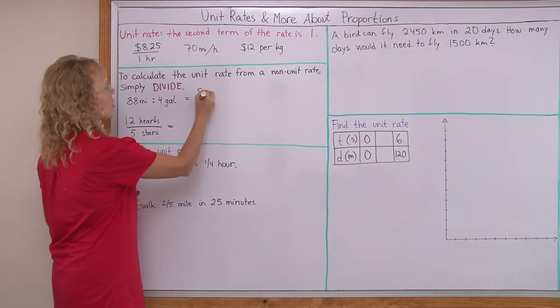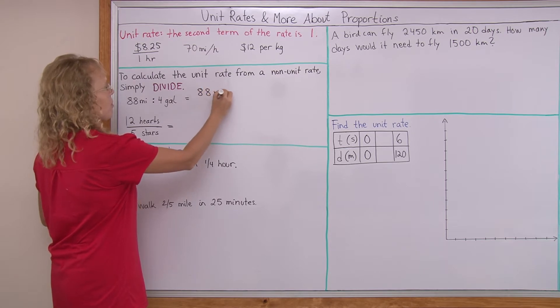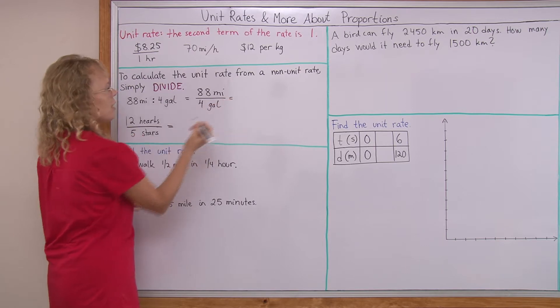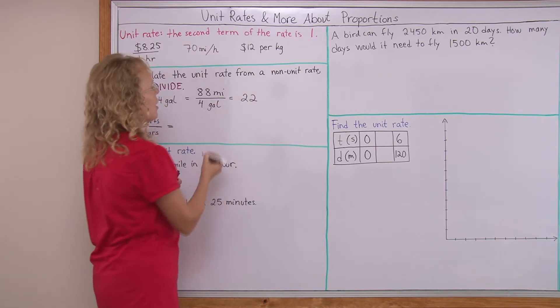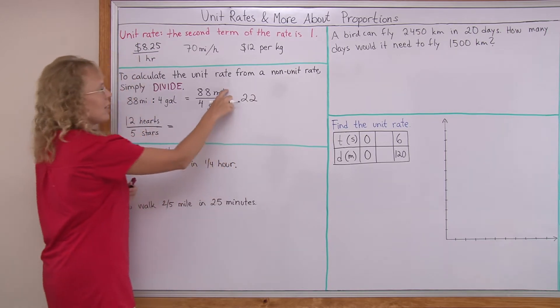Then we do the division here. Let me write this first using the division line. 88 miles divided by 4 gallons. And then 88 divided by 4 is 22.